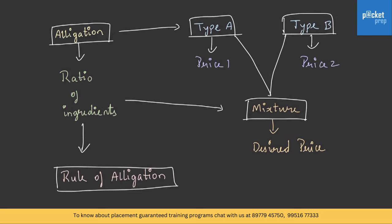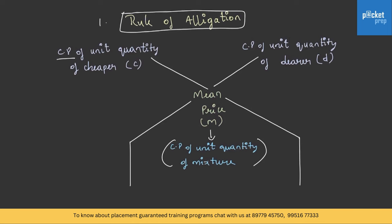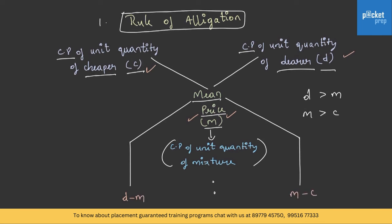Let's understand the rule of allegation. The first value, C, is the cost price of unit quantity of the cheaper ingredient. D is the cost price of unit quantity of the dearer ingredient. The mean price, M, is the cost price of unit quantity of the mixture obtained from the two ingredients. Keep in mind that D > M > C. To achieve the ratio, D minus M is to M minus C.